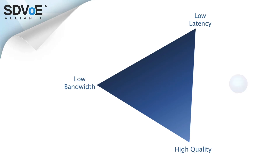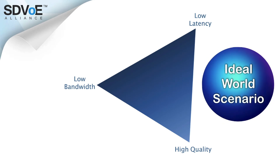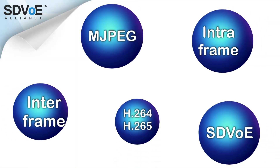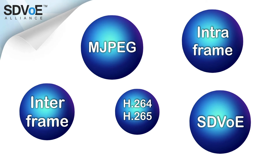Let's go back to the codec triangle. In an ideal world, the codec would encode the video such that latency levels are as low as possible, bandwidth usage would be low enough to fit through the network switch, and yet the quality of the video on the display would remain as clear as the quality of the original video from the source. It's time to check out the codec options.